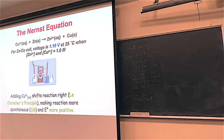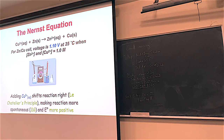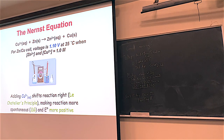Le Chatelier's principle is something we've seen this whole quarter and it still helps. Adding more copper 2+, more reactant, Le Chatelier's principle says more product, bigger K, more product-favored, means cell potential goes up. 1.11 volts versus 1.10 volts doesn't seem like a lot, but it is a shift to the product side. You can actually get more power from your chemical system if you know what you're doing.